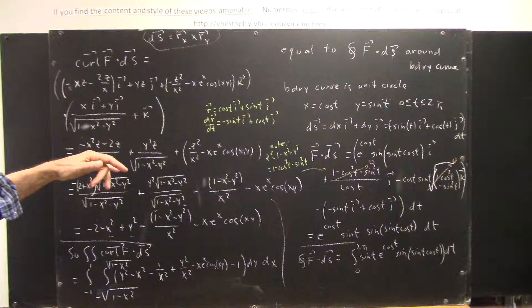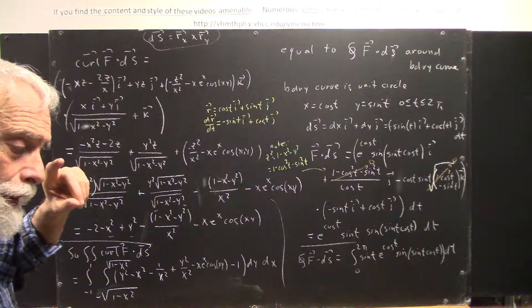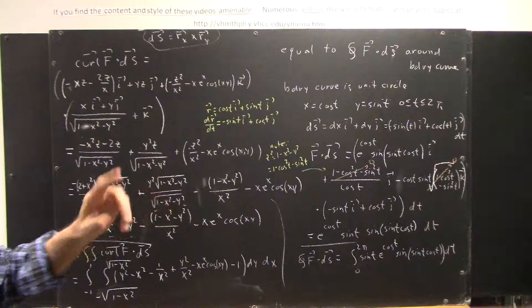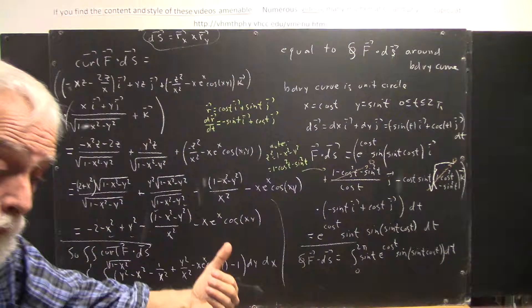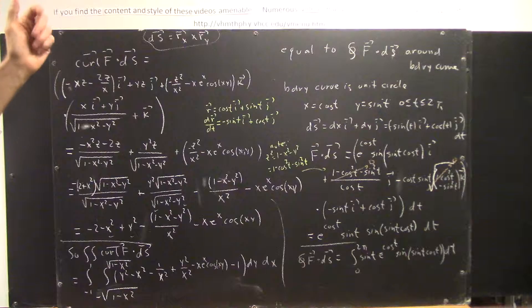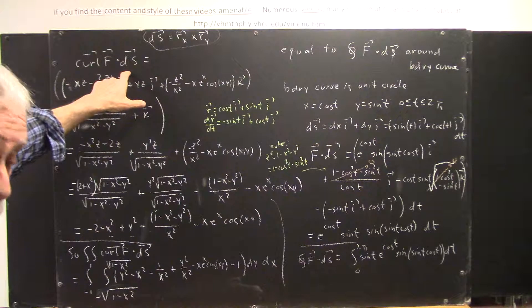and we get what amounts to the normal component of the curl of f, the component perpendicular outward, perpendicular to the surface,